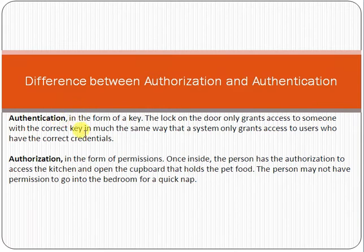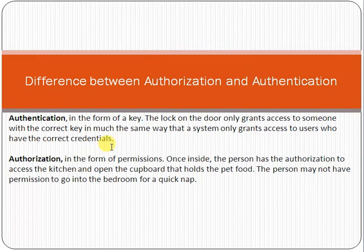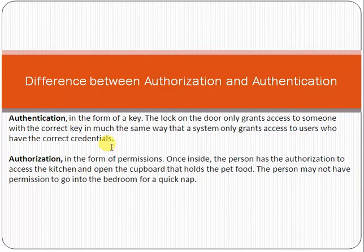Authentication is like a key to a door — the lock on the door only grants access to someone with the correct key, in the same way that a system only grants access to users who have the correct credentials. Authorization, in the form of permission, means that once inside, the person has authorization to access the kitchen and open the cupboard that holds the pet food, but the person may not have permission to go into the bedroom for a nap.